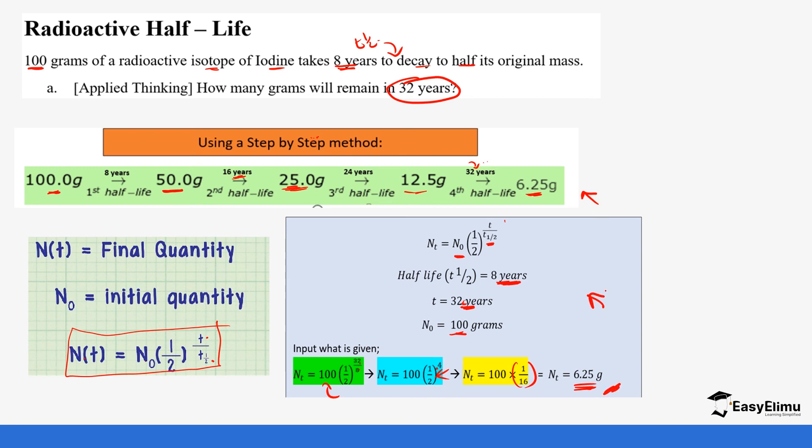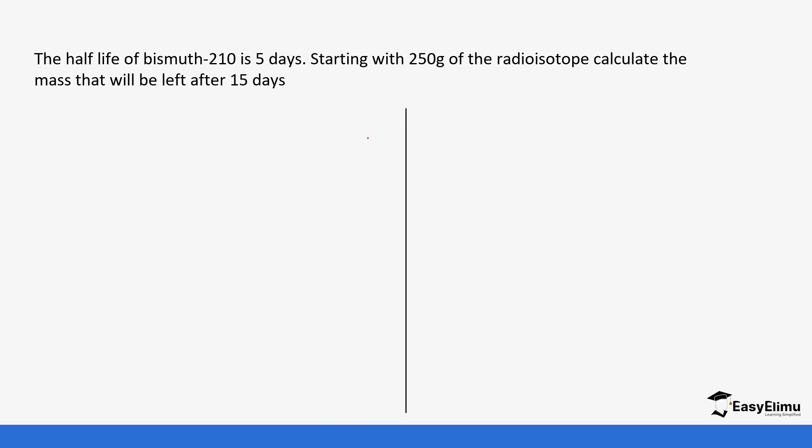Let's look at a few questions. The half-life of Bismuth-210 is five days. Starting with 250 grams of the radioisotope, calculate the mass that will be left after 15 days. We used the long method so we start with 250 grams. After every five days it's going to reduce. How are you able to know how many halves to work with? You're going to take the total number of days which is 15 days. After every five days it decays to a half, so how many halves are in 15? This tells us there are going to be three halves.